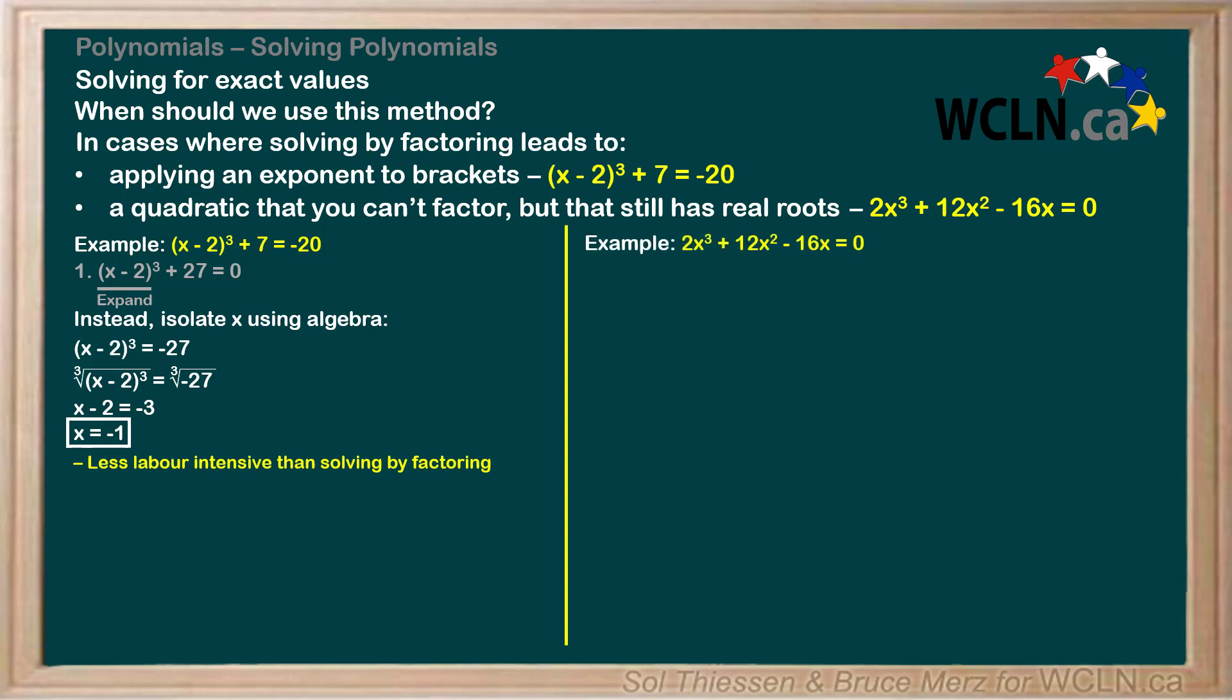Next, we'll look at the other example of 2x³ + 12x² - 16x = 0. Here, we can't isolate x unfortunately, so this will start off like a solving by factoring example. We already have a 0 on one side, so we'll move straight to step 2 and apply the golden rule of factoring, which is to pull out common factors as soon as possible. We'll pull out 2x to leave us with 2x(x² + 6x - 8) = 0.